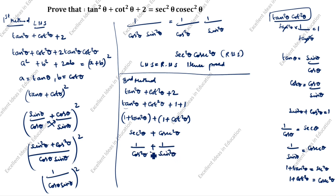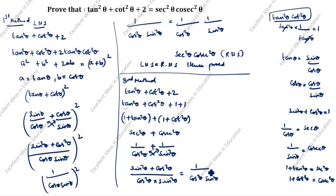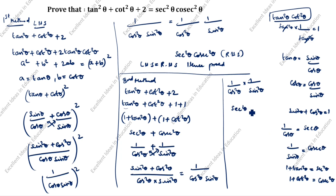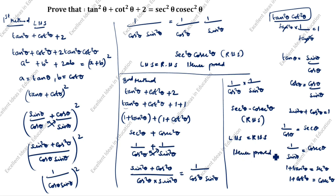Cosecant theta is 1 by sine, so cosecant squared theta means 1 by sine squared theta. Cross-multiplying: we get sine squared theta plus cos squared theta divided by cos squared theta times sine squared theta. Since sine squared theta plus cos squared theta equals 1, this becomes 1 divided by cos squared theta into sine squared theta. Splitting: 1 by cos squared theta is secant squared theta, and 1 by sine squared theta is cosecant squared theta. So LHS equals RHS — hence proved. This is the second method.